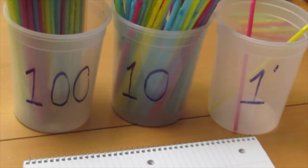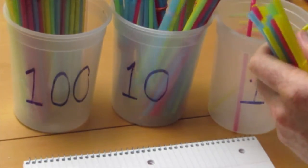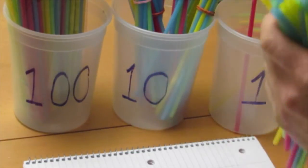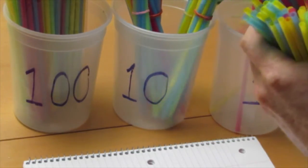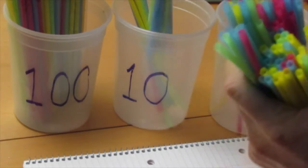And now we have to count the tens bin: 10, 20, 30, 40, 50, 60, 70, 80, 90, 100. Well now this needs to go in the hundreds bin.